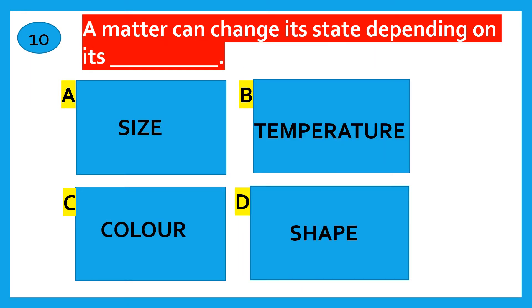A matter can change its state depending on its size, temperature, color, shape. The current answer is temperature.